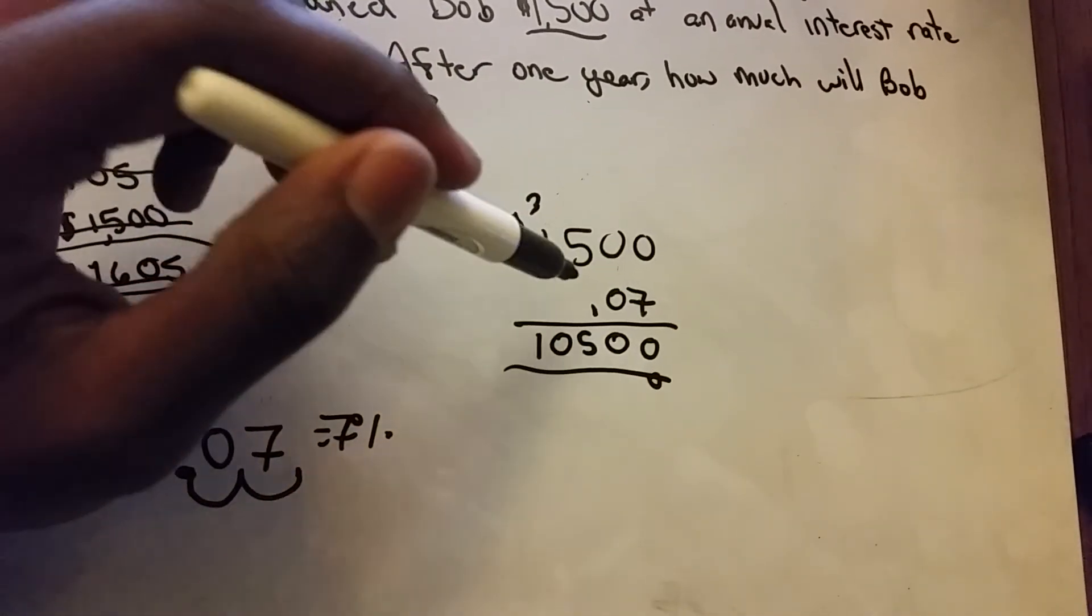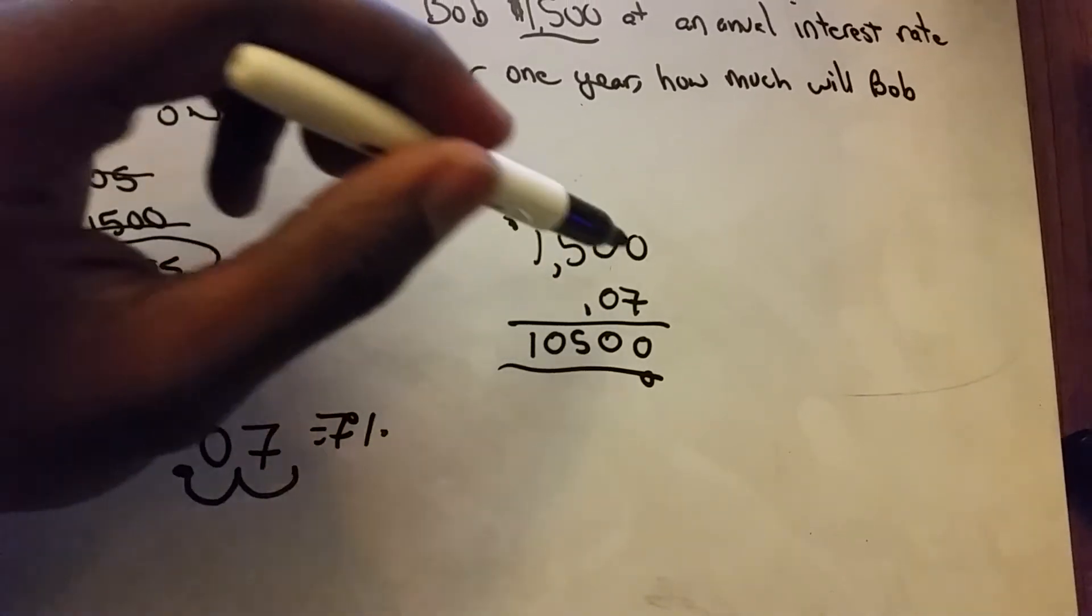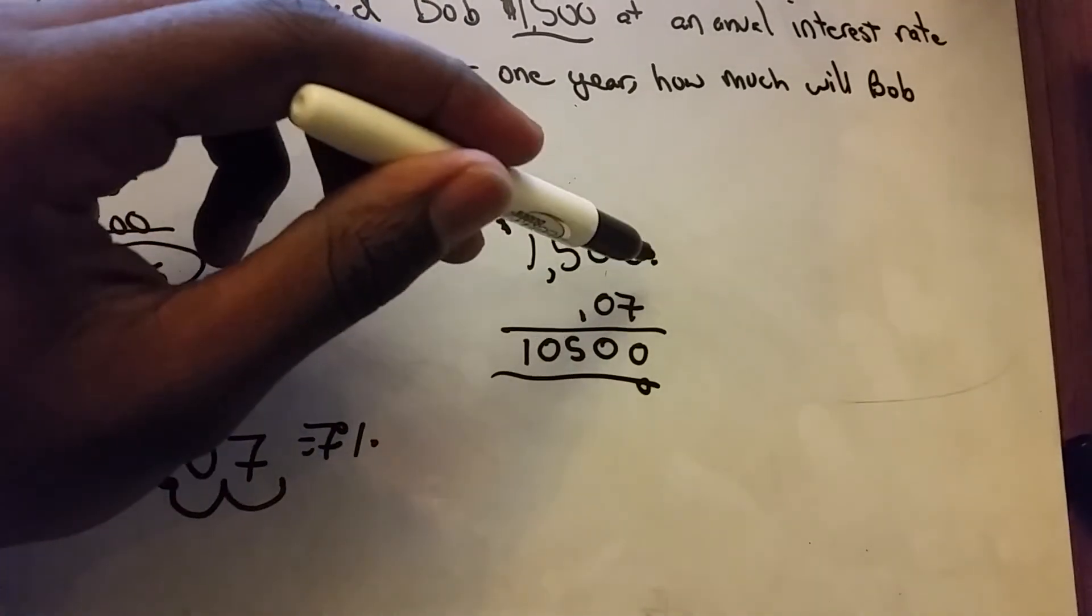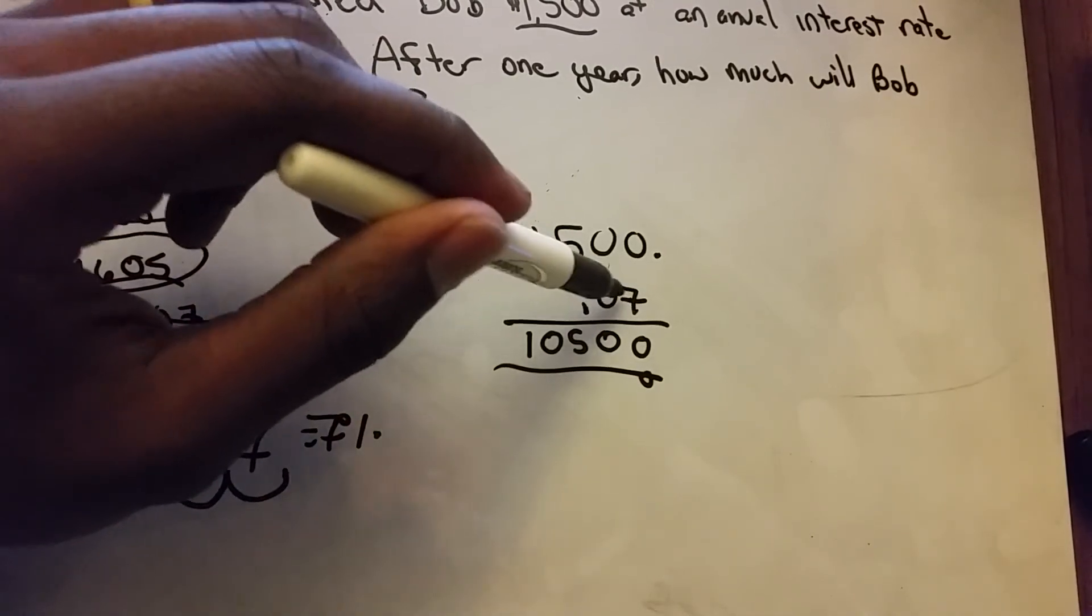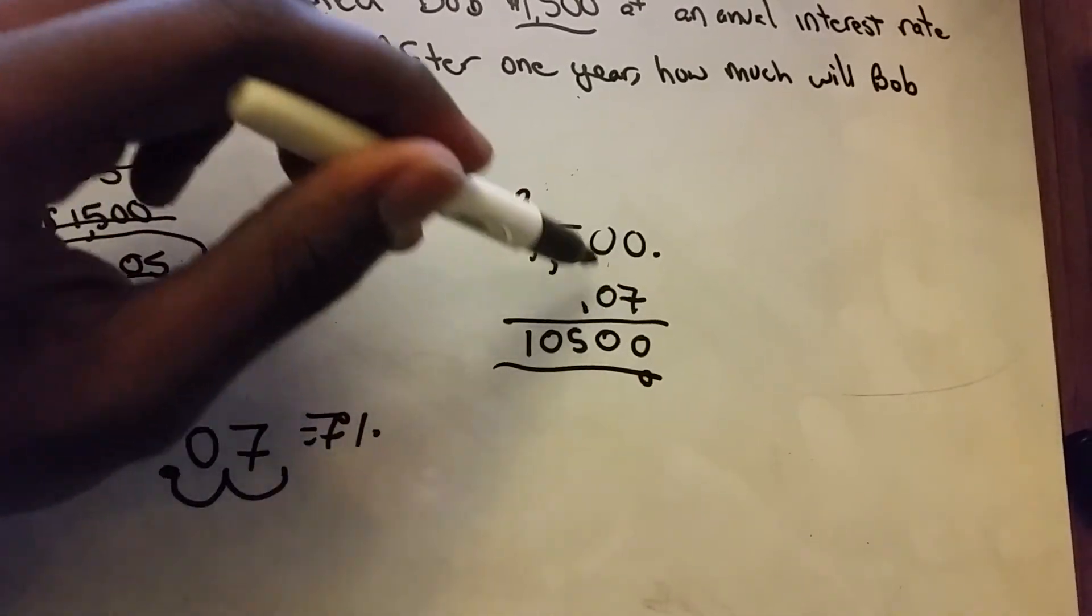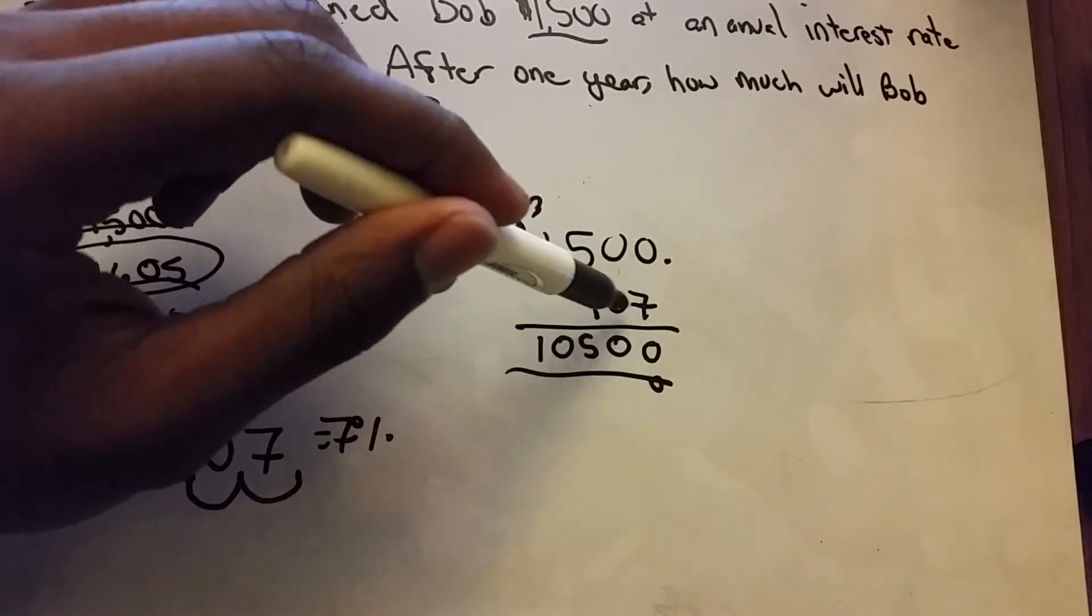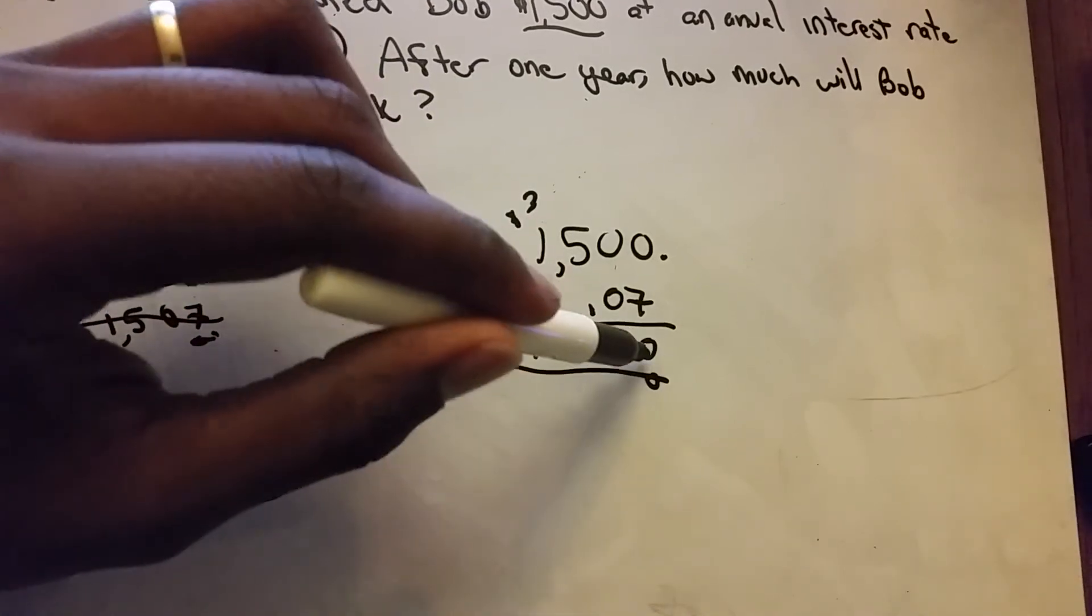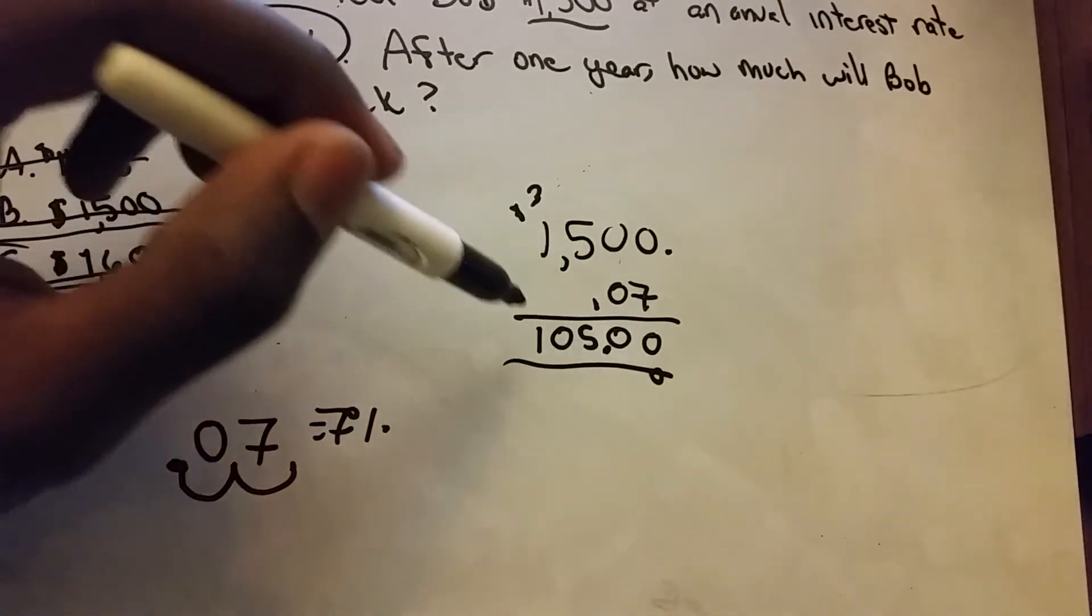Now in the numbers that we're multiplying, you see that we have a decimal place here, and it's not there, but if there was one, the decimal place would be there. So we have two numbers behind the decimal place in our factors—this is one factor, 1500 is the other factor. So in our answer, we have to have two numbers behind the decimal place.